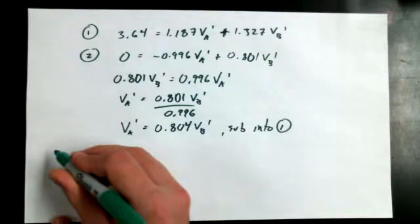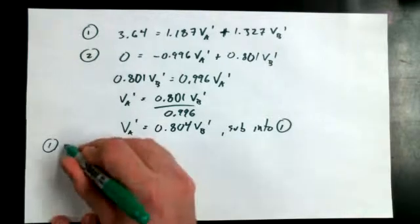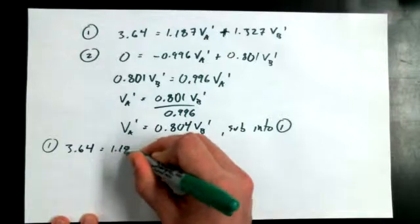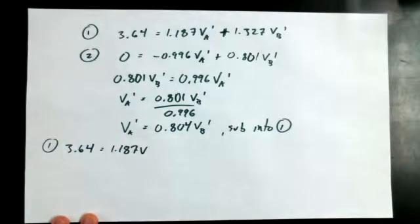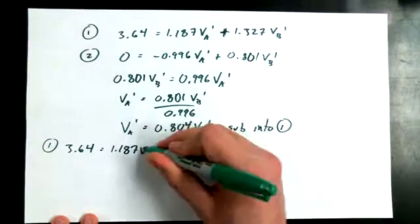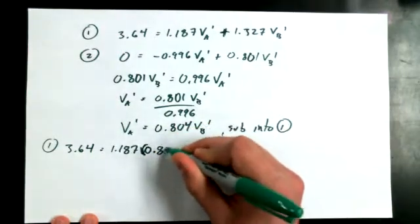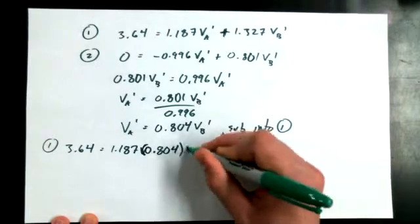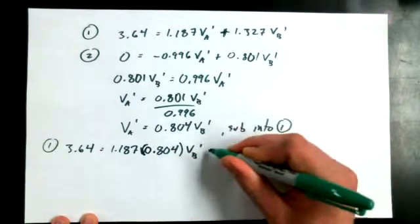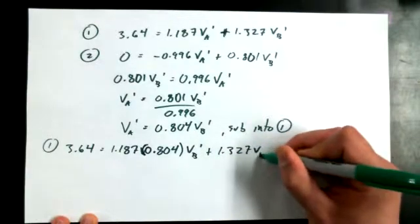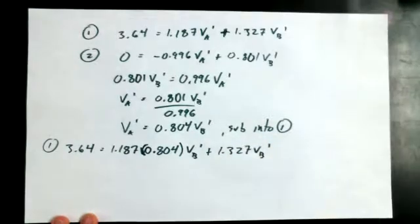So going back into equation 1, we could say 3.64 equals 1.187 V... instead of saying VA-primed, I'm sorry, I almost messed that up. Times 0.804 times VB-primed plus 1.327 VB-primed.